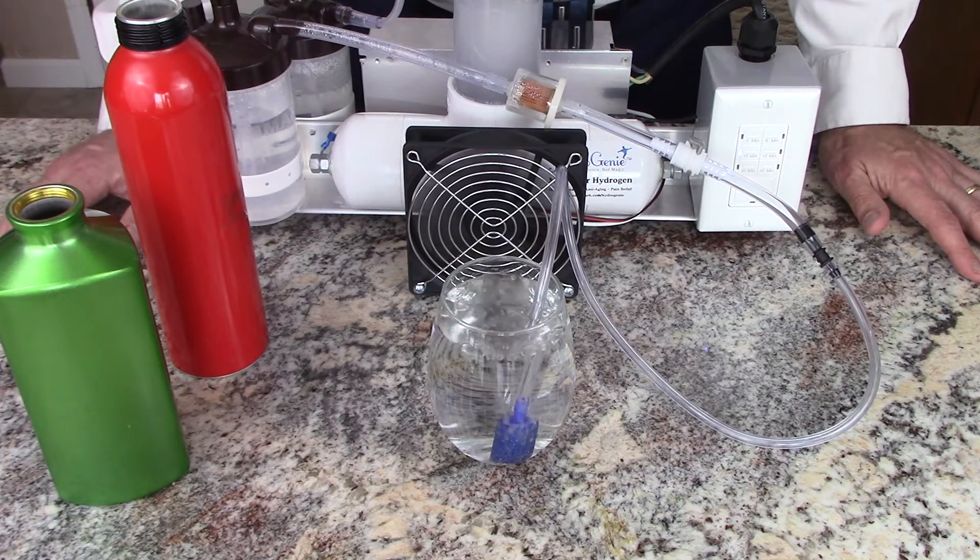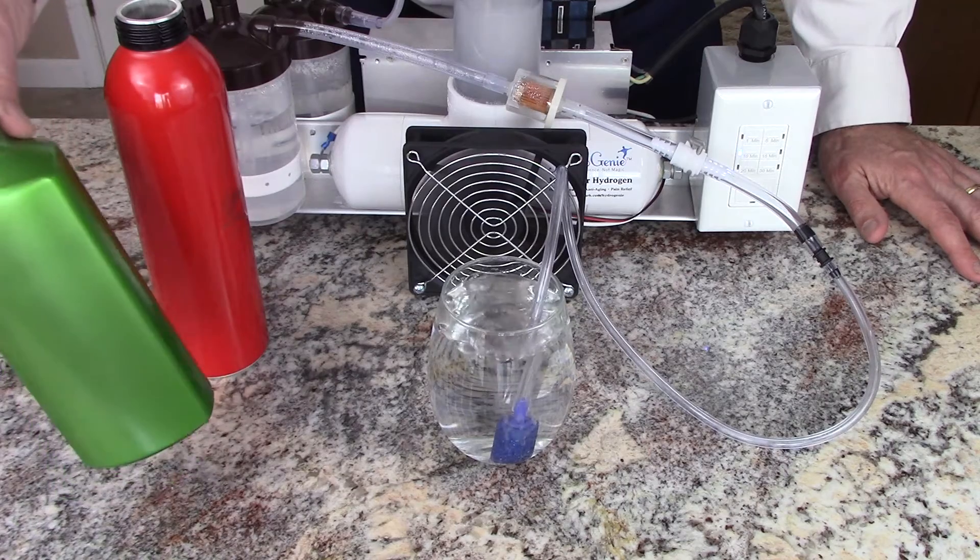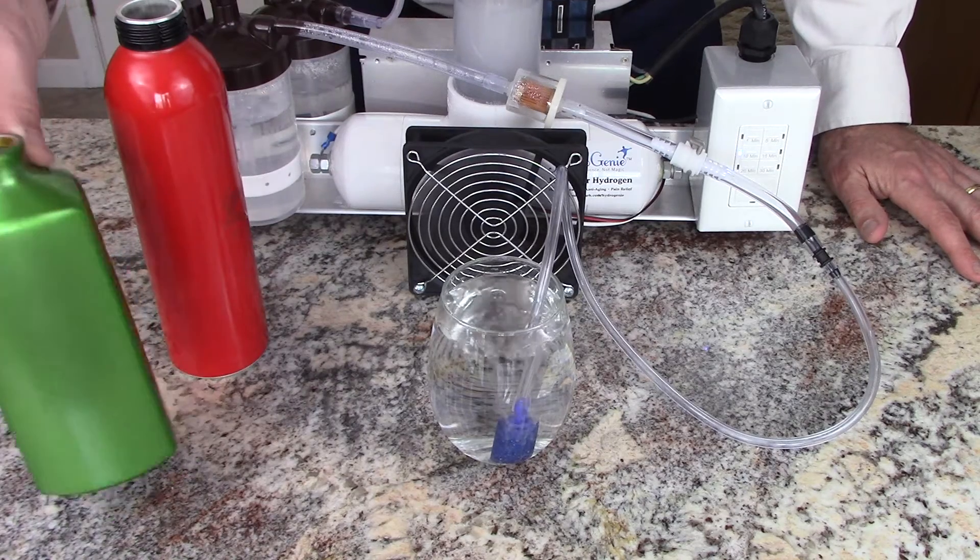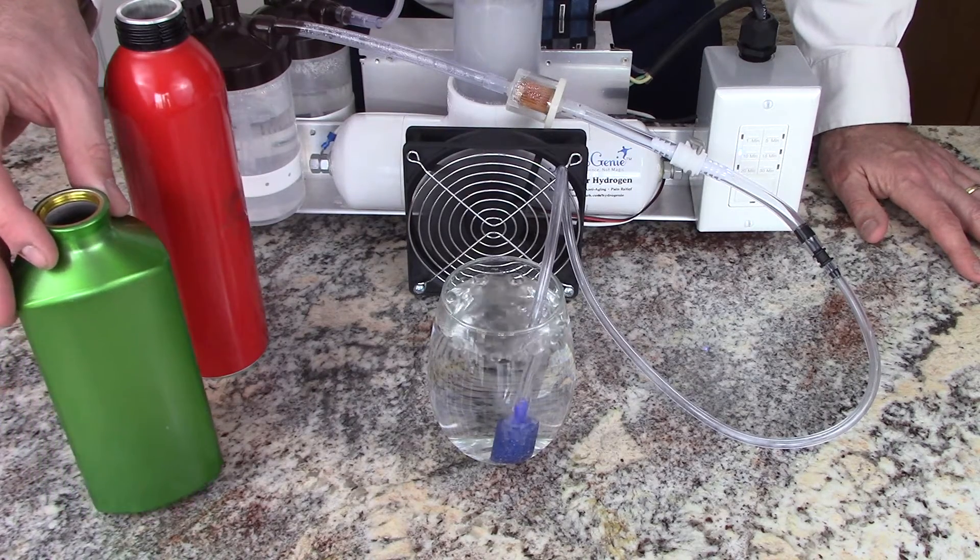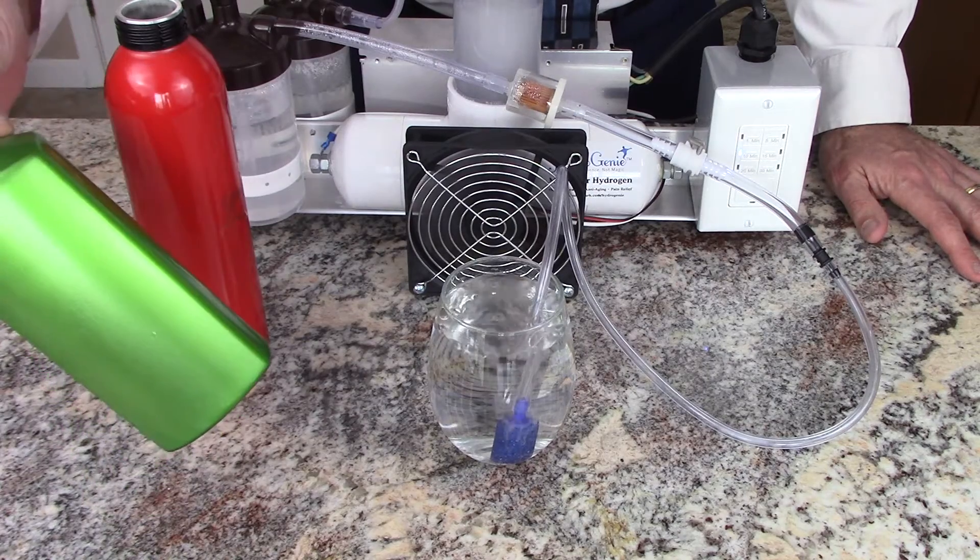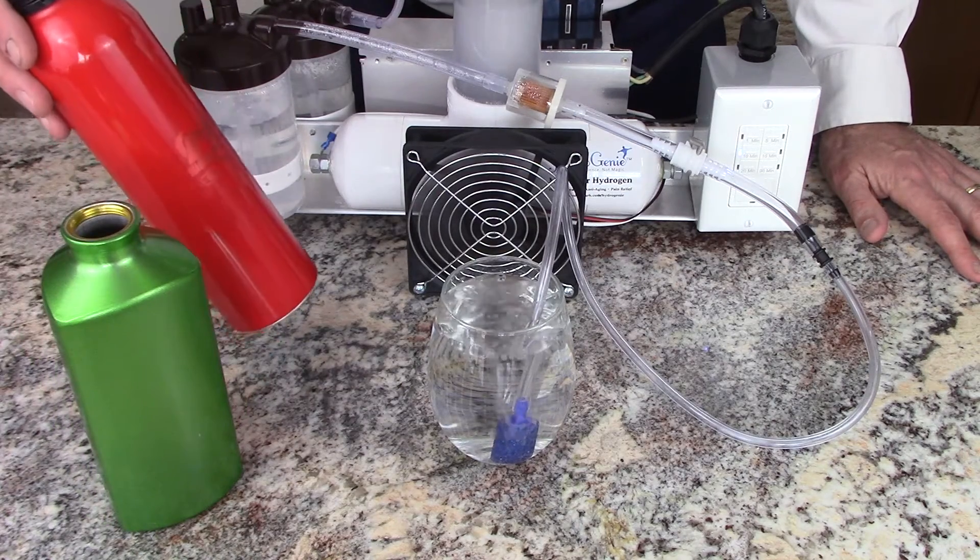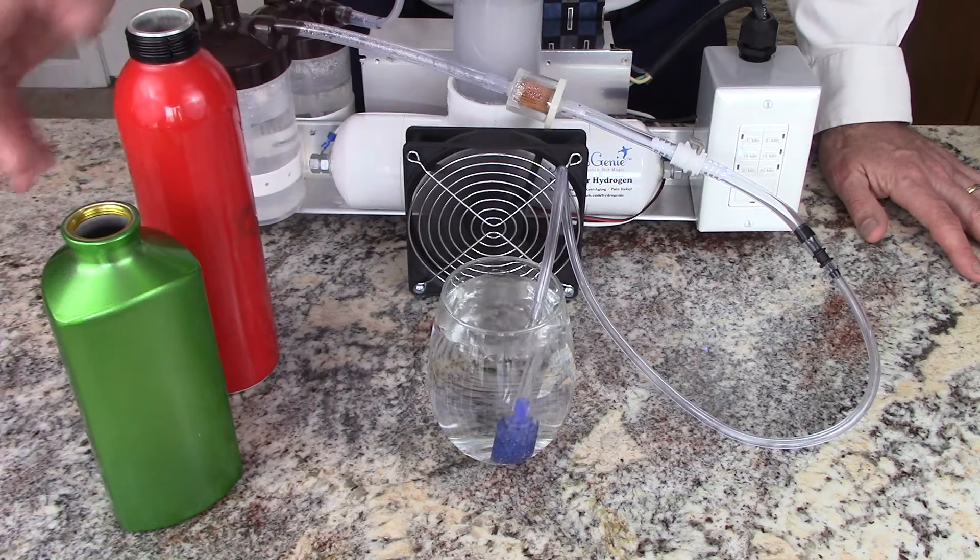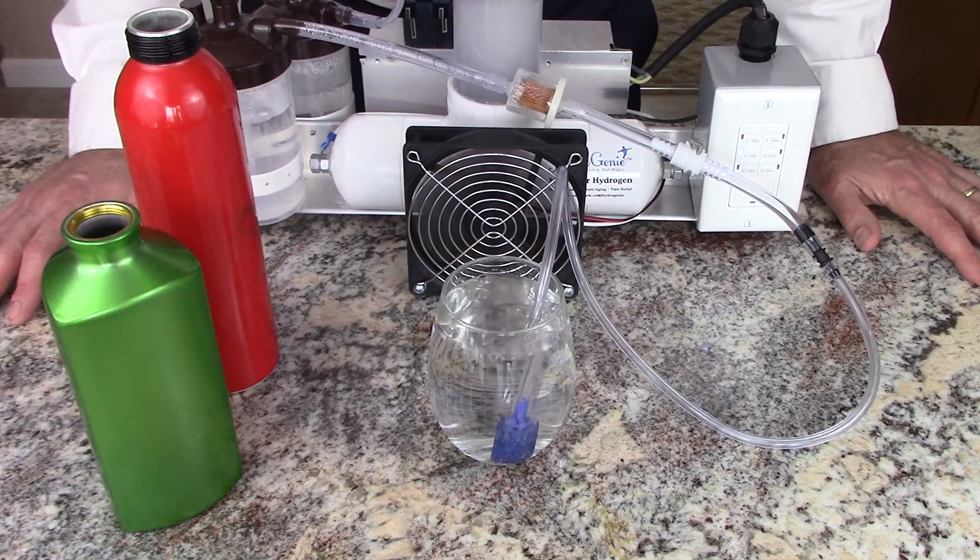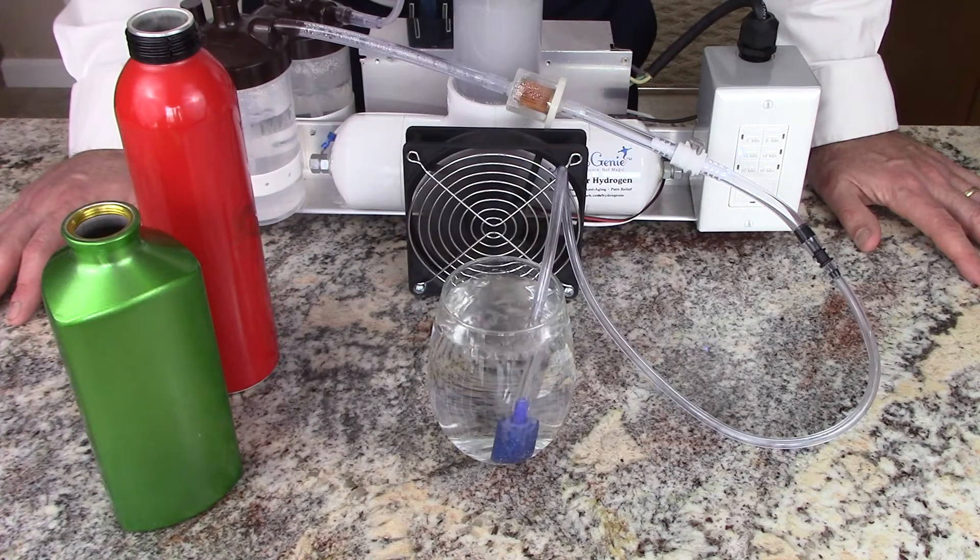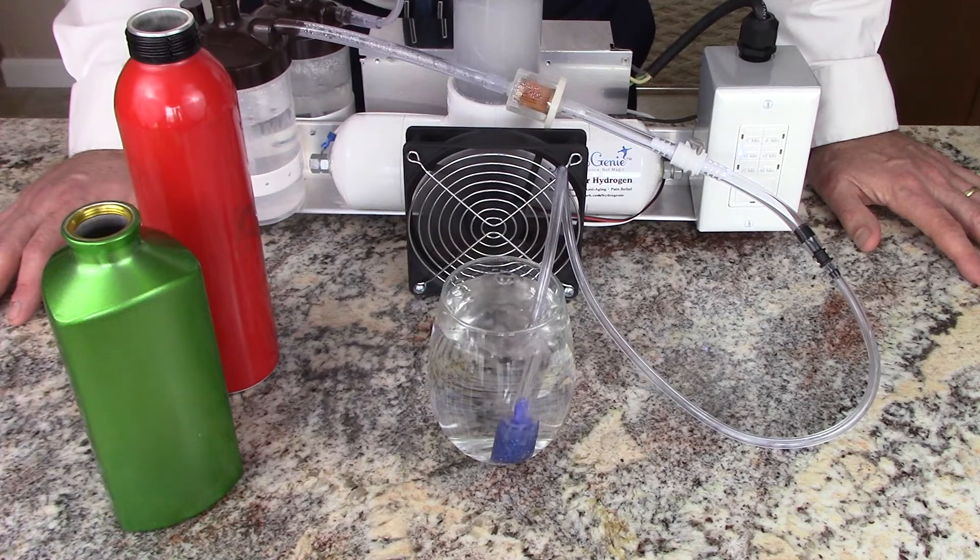We're using glass in this demonstration, but you can get drinking water bottles online or in stores that are made of aluminum. They actually infuse a little better and a little quicker, and when you cap them up, the aluminum stops the hydrogen from escaping as fast.